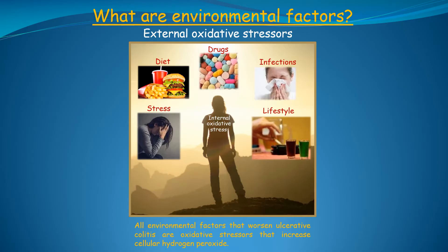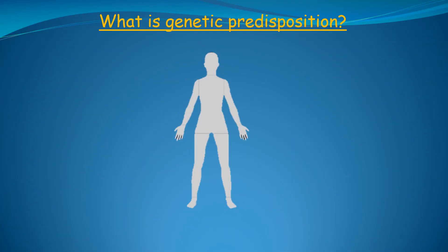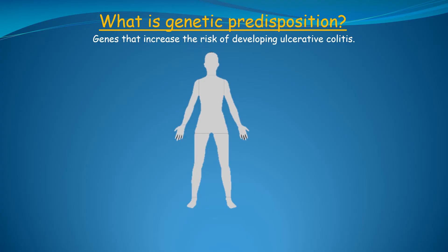In the next slide, we will define the genetic predisposition that increases the risk of developing ulcerative colitis in the first place. What is genetic predisposition in ulcerative colitis? In simple terms, genetic predisposition refers to genes that increase the risk of developing ulcerative colitis. To explain this a little further, we'll start at the cellular level. The dots in the diagram represent the cells that make up the body, and there are trillions of cells in the body.